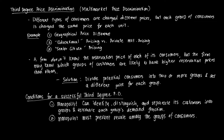Welcome to this video on third-degree price discrimination, the last in our series on price discrimination. Third-degree price discrimination is often called multi-market price discrimination. Different types of consumers are charged different prices, but each group of consumers is charged the same price for each unit. Essentially, the monopolist segments its market into different groups and charges the same price within each specific group.